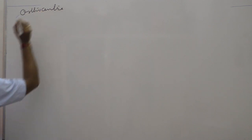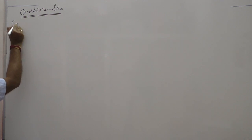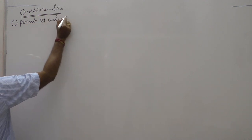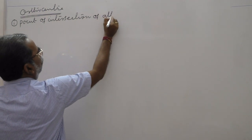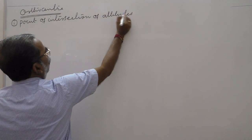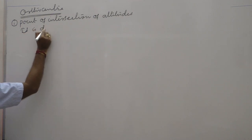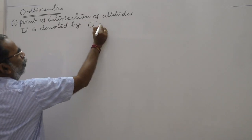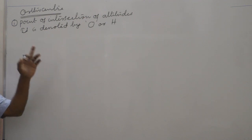Next: the orthocenter. The orthocenter is the point of intersection of the altitudes of a triangle. It is generally denoted by O or H.